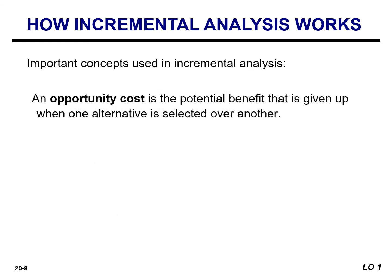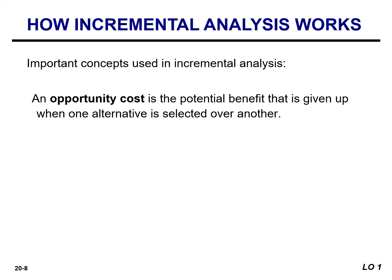Another important concept is opportunity cost. Often, in choosing one course of action, the company must give up the opportunity to benefit from some other course of action. For example, if a machine is used to make one type of product, the benefit of making another type of product with that machine is lost. This lost benefit is referred to as opportunity cost. A personal example would be if you were considering giving up a high paying summer job to travel overseas — the foregone wages would be an opportunity cost of traveling abroad. These costs are relevant in making decisions.